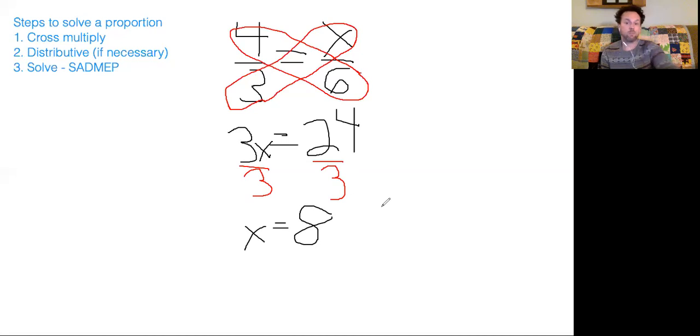And if I take this 8 and plug that back into my original proportion, I'm left with 4 thirds equals 8 over 6. And those are equivalent fractions, 4 thirds, 8 sixths. You're saying the same thing. It reduces, both of those would reduce to 1 and 1 third. So let's do a couple more.